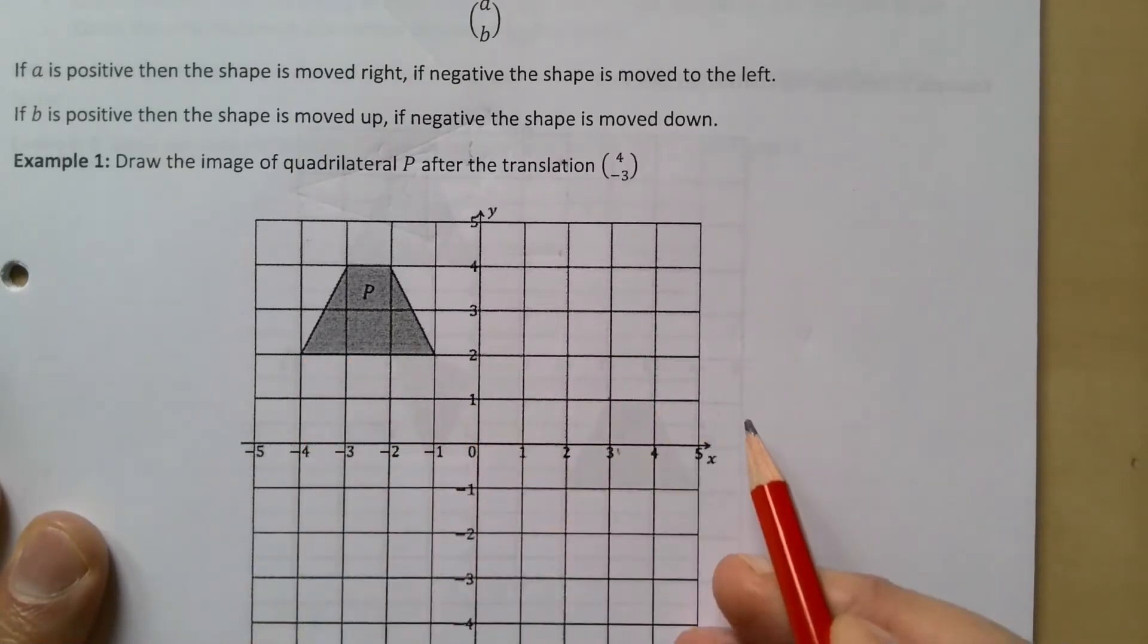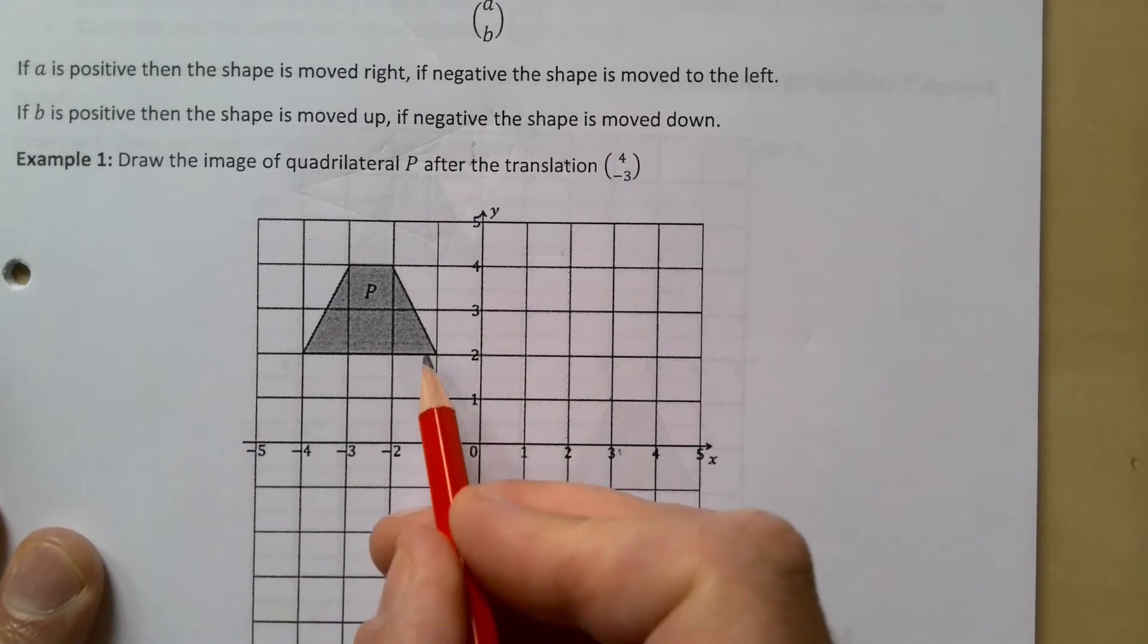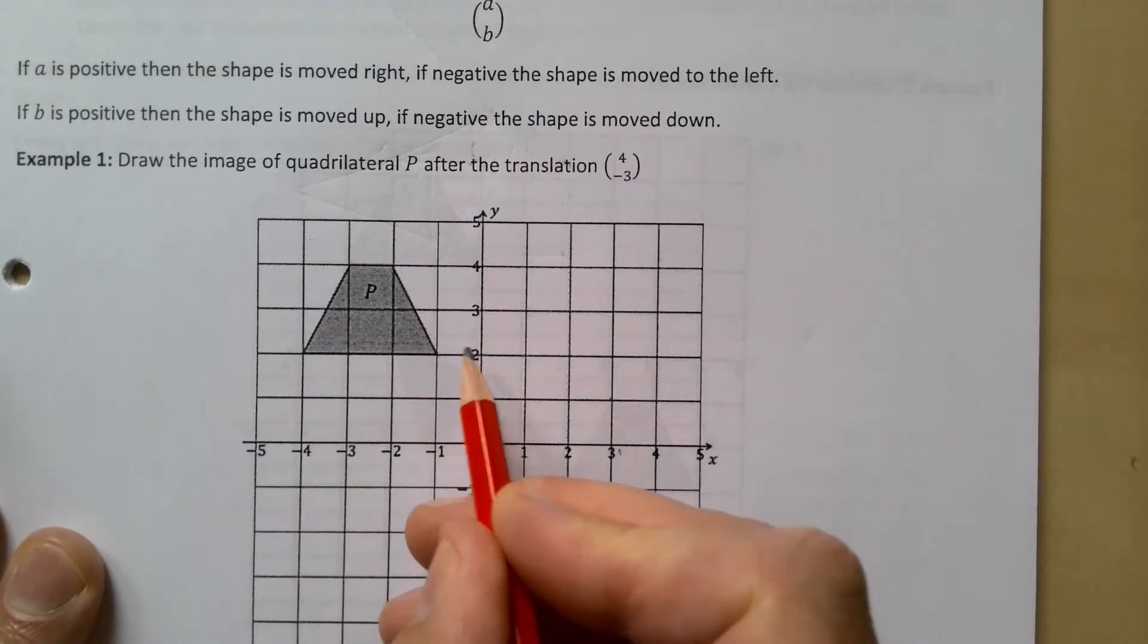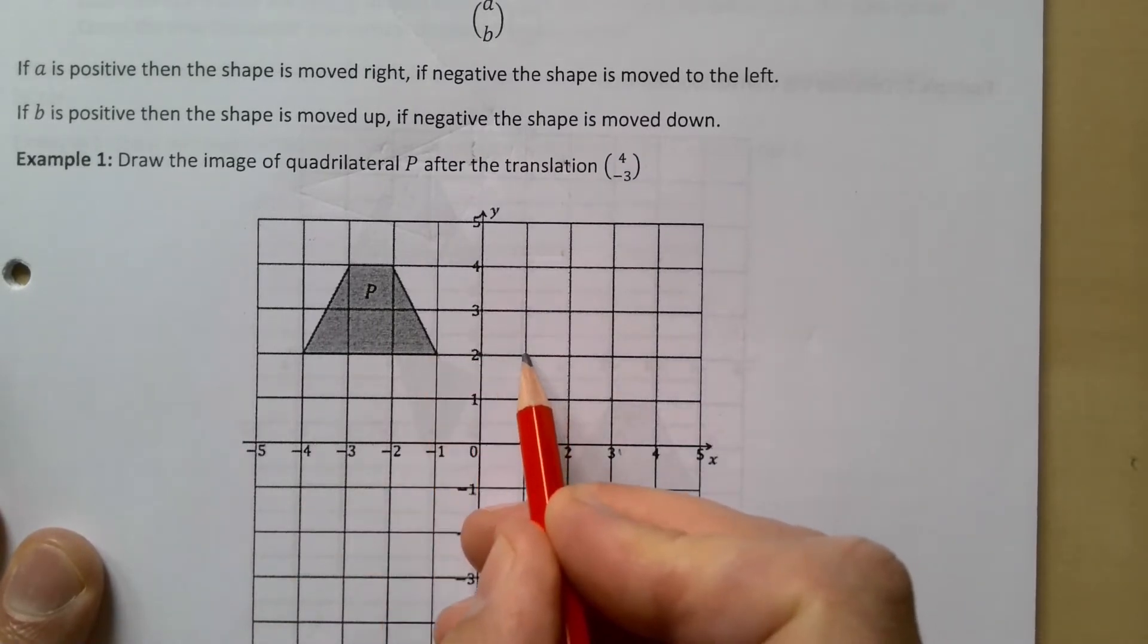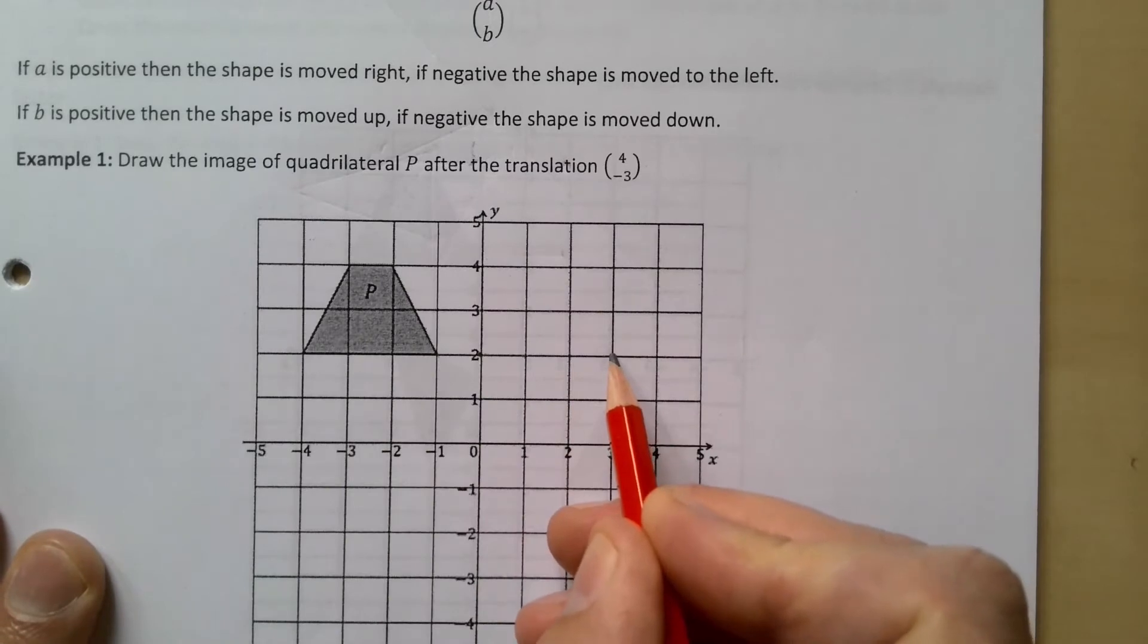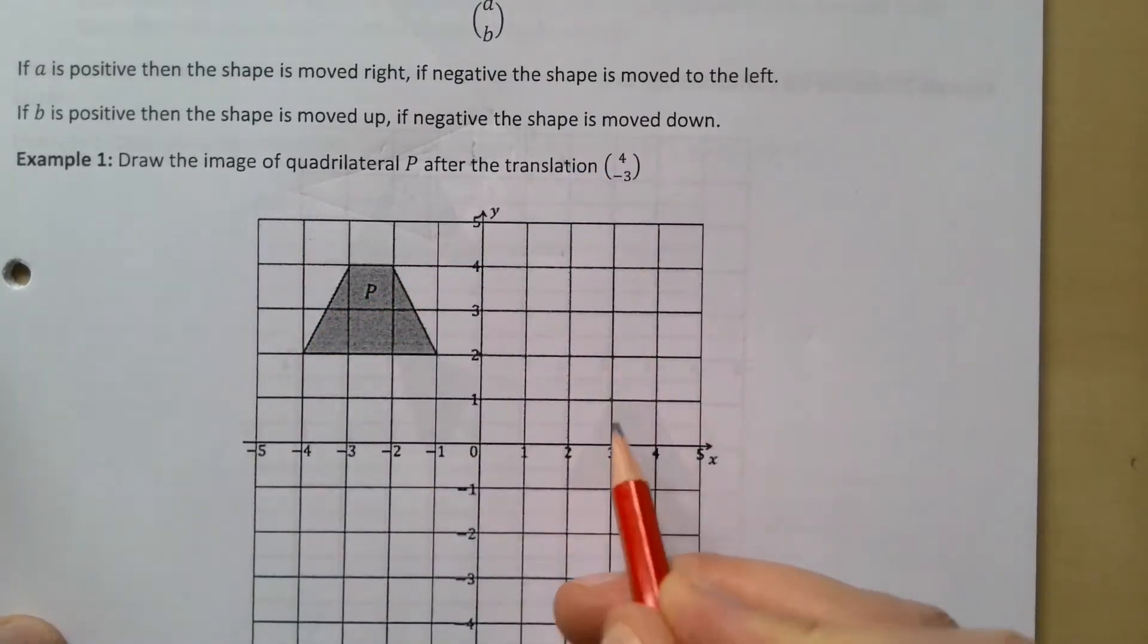So I'm going to move this one - go across 4, 1 2 3 4, and then the minus 3 means down 3, so 1 2 3. And I know it's that equivalent point. Let's move to the rest of the shape that needs to be drawn on here, so that's three squares across.